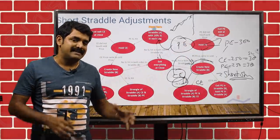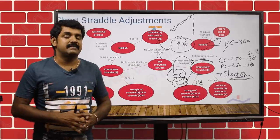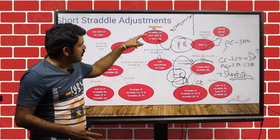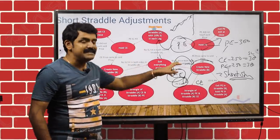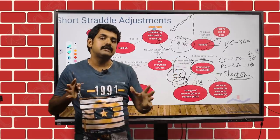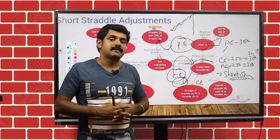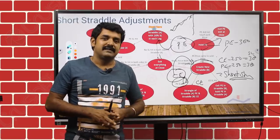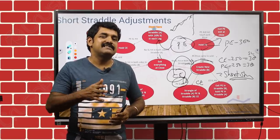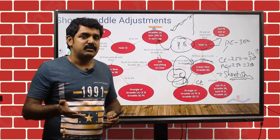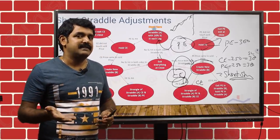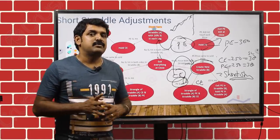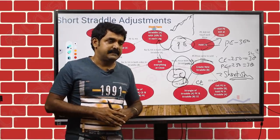It's an auto-adjustment mode. It really works well and it is mainly to defend the loss in Straddle A — Straddle B is created to defend the loss in Straddle A. These are the conditions. I hope it may be difficult to understand everything in a single viewing; you can watch this video again and again to understand the adjustments in detail.